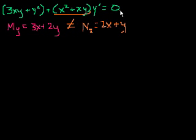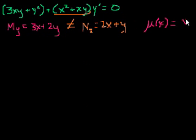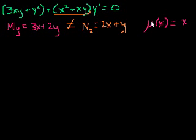We called that mu. In the last video, we actually solved for mu. If we multiply both sides of this equation by mu of x, which is equal to x, it should make this into an exact differential equation. It's important to note there might have been a function of y, or a function of x and y, that would also make it exact. But really our whole goal is just to make this exact, so it doesn't matter which integrating factor we pick. This is called the integrating factor.